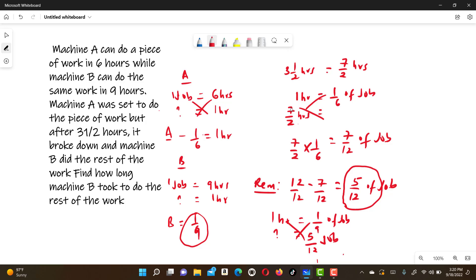Cross multiplying, you will find this is the same as five over 12 divided by one over nine, which is five over 12 multiplied by nine over one. This will be 45 over 12, which is the same as three and three-quarter hours or three hours 45 minutes.